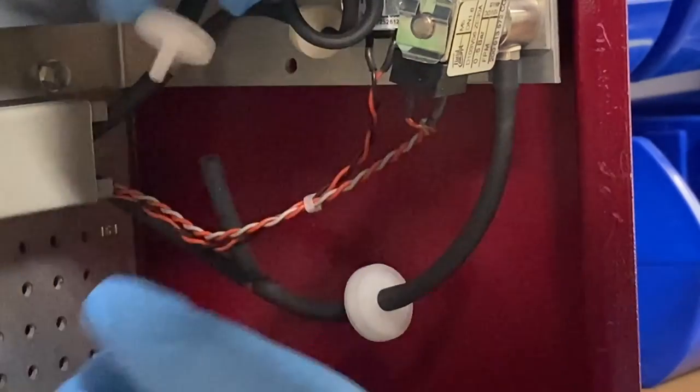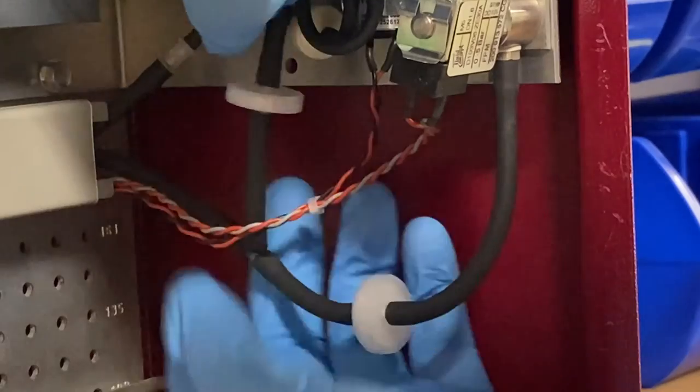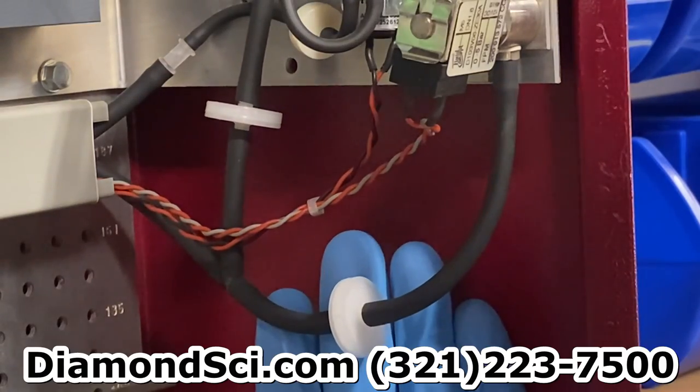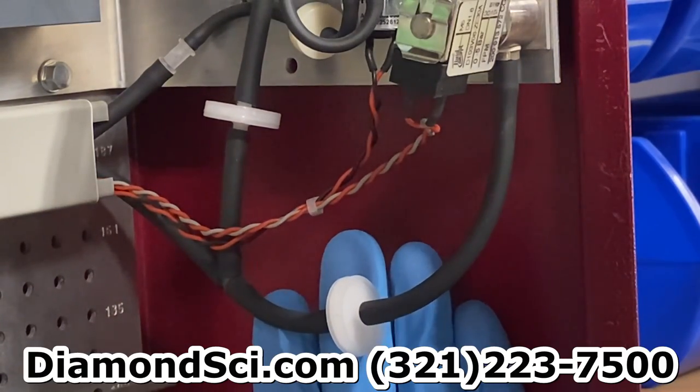To learn more about how to maintain the SWG 100, feel free to reach out to us at DiamondSci.com or call us anytime at 321-223-7500.